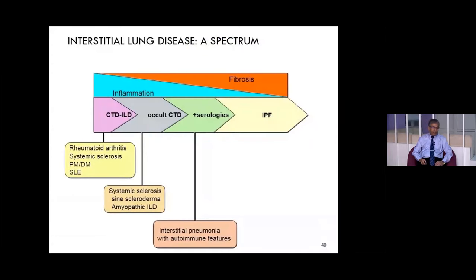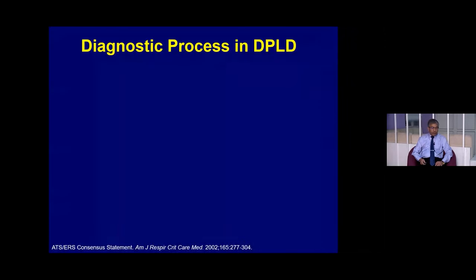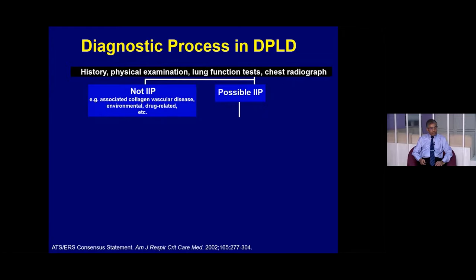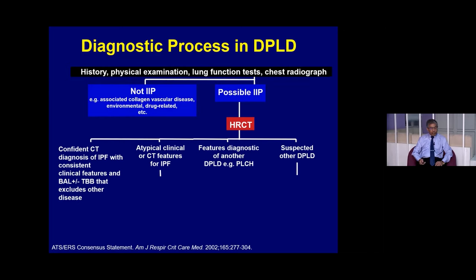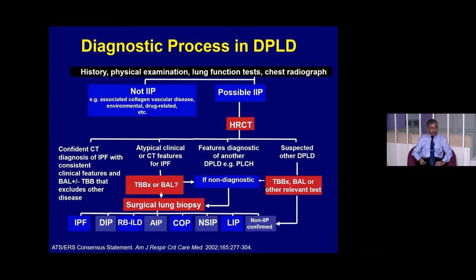Pathologically, ILD can be inflammatory — as in CTD-ILD — or fibrotic, as in IPF. Diagnosis requires basic clinical medicine: history, physical examination, detailed lung function testing, and chest radiography. We can differentiate IIPs and possible IIPs at this level. Subsequently, HRCT with biopsies and further investigation can narrow down the specific diagnosis. Ultimately, a combined multidisciplinary discussion involving the clinician, radiologist, pathologist, and related specialists is needed to reach a single diagnosis.